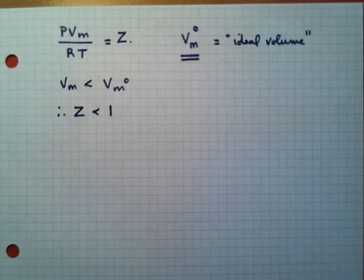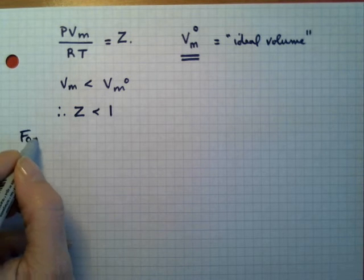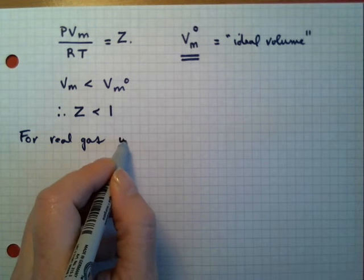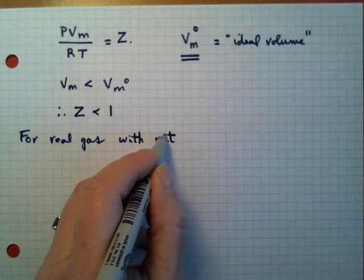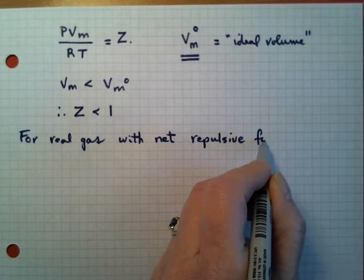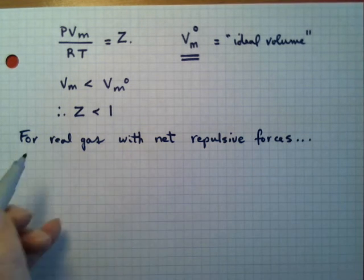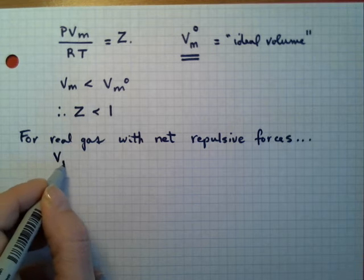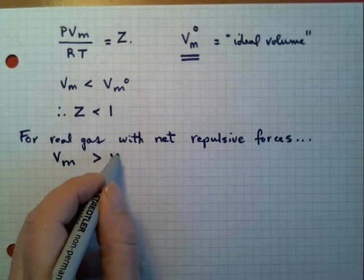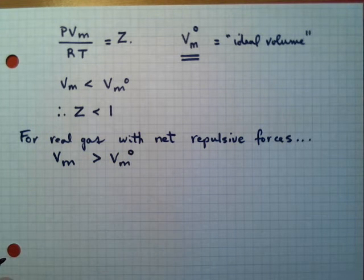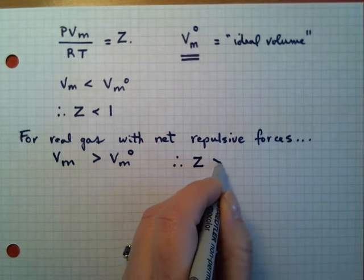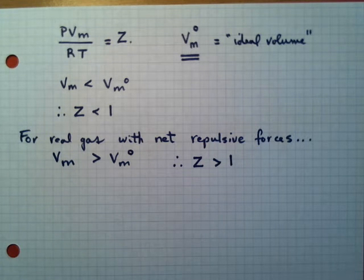And similarly, if we take another example, for a real gas that's experiencing net repulsive forces among its molecules, then what we observe is that the molar volume observed is going to be slightly greater than that which is predicted by the PVNRT equation. Therefore, my Z value is going to be slightly greater than 1 in that case.